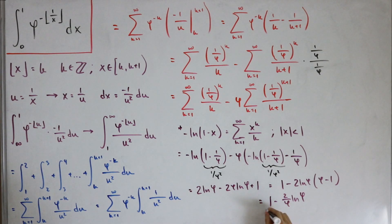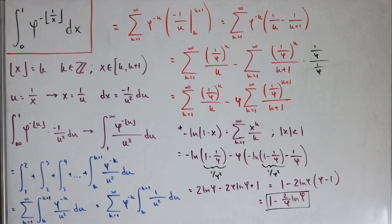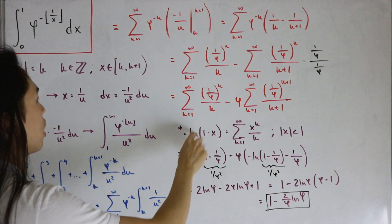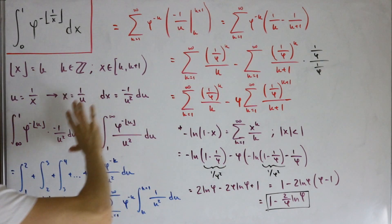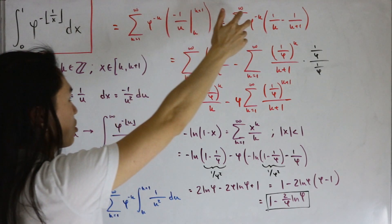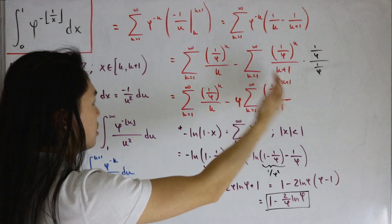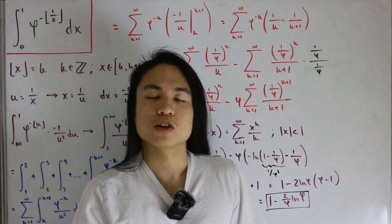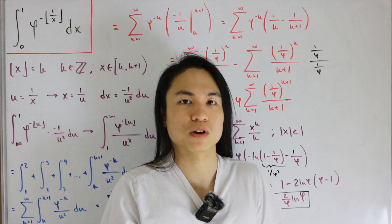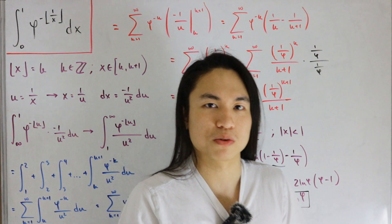So that is our final answer to the integral with the golden ratio base and the floor function exponent — just like that, utilizing all these tricks and elementary identities. We used a Maclaurin series substitution, the floor function definition to break it into a sum of integrals, and evaluated the antiderivative to arrive at the simplification. Happy 2023, and let's make 2024 another year to remember!